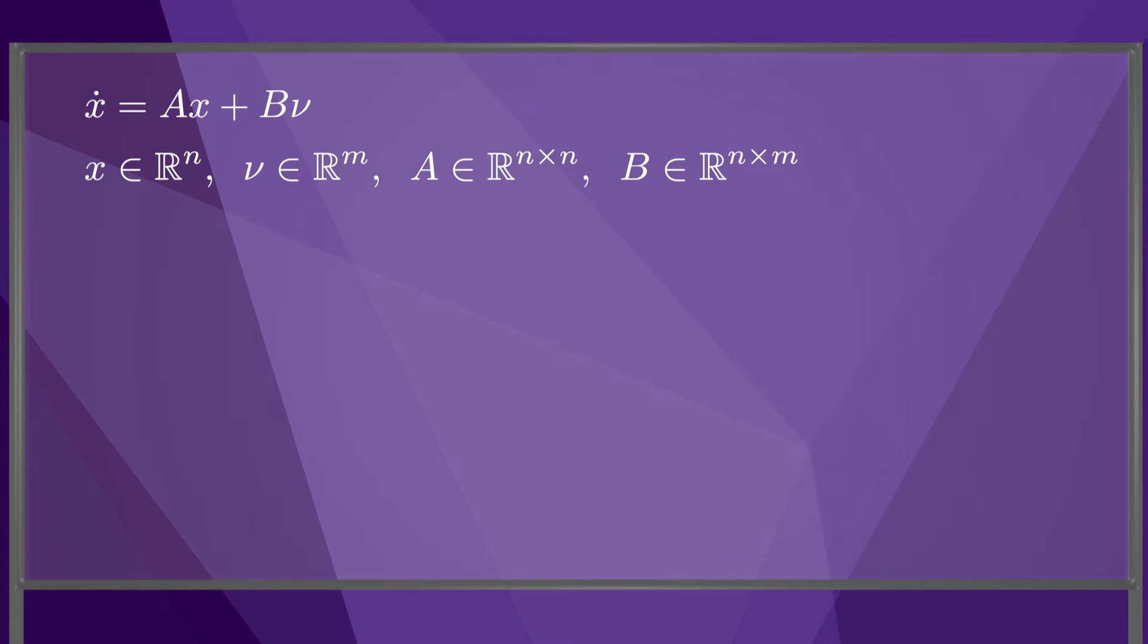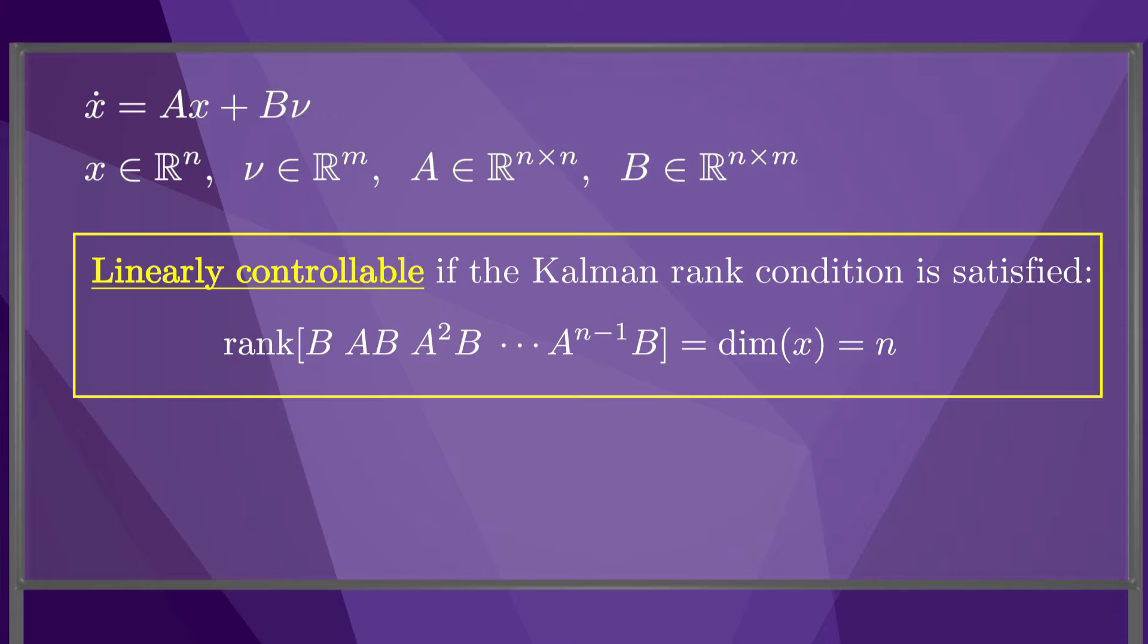Systems such as this are said to be linearly controllable if they satisfy the Kalman rank condition. The rank of the matrix whose columns are given by the matrices b, ab, a squared b, etc., is equal to n, the dimension of x. This condition ensures that the m controls can act on all n states.